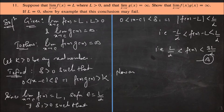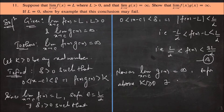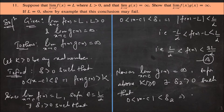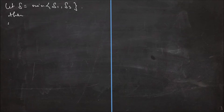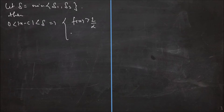Now, as limit x tends to c of g(x) is equal to infinity, for the above k greater than 0, there exists delta 2 greater than 0 such that 0 less than |x minus c| less than delta 2 implies g(x) is greater than 2k by L. Mark this as B. Now let delta equal to minimum of delta 1 and delta 2. Then 0 less than |x minus c| less than delta implies f(x) is greater than L by 2 and g(x) is greater than 2k by L.